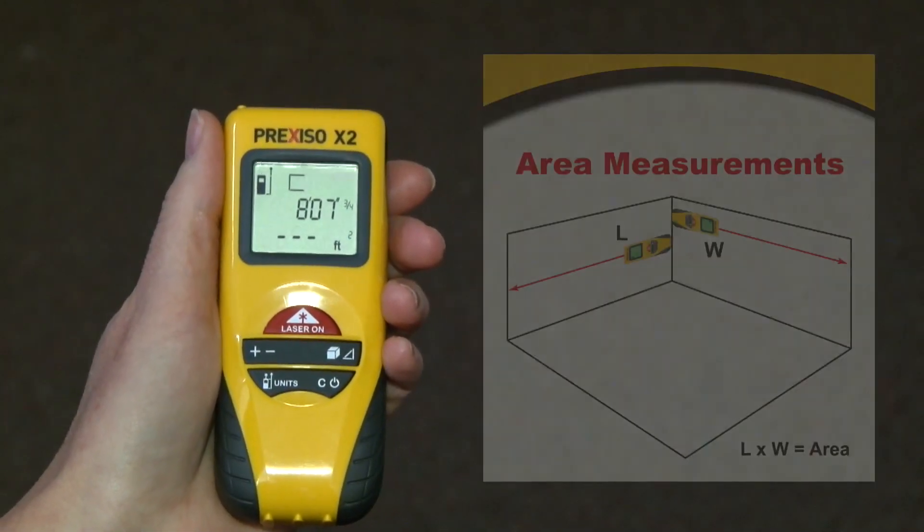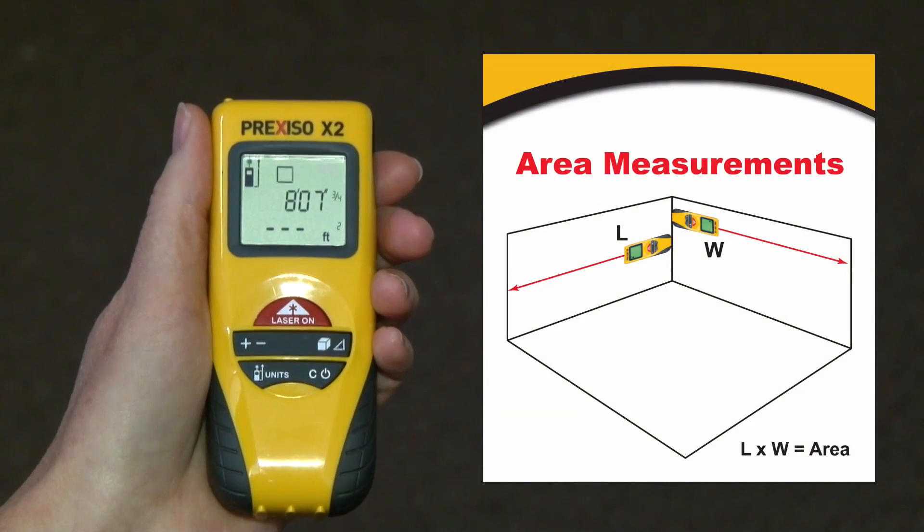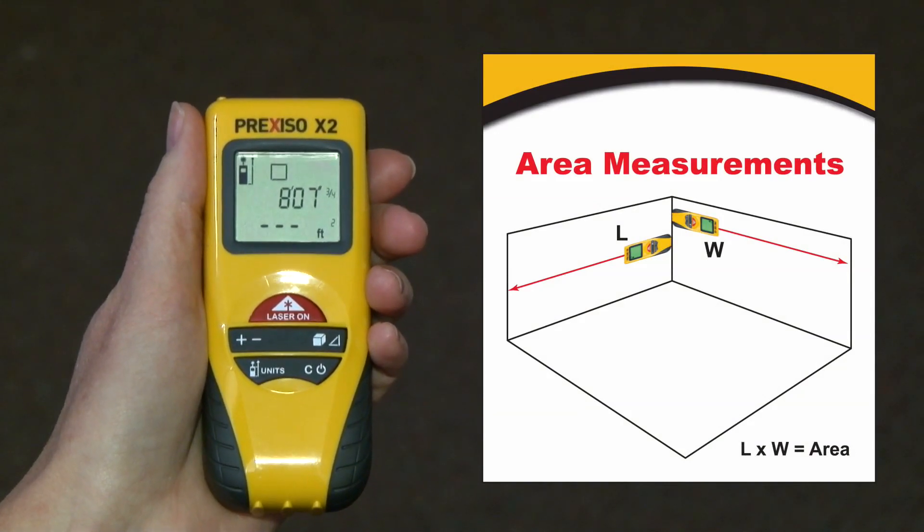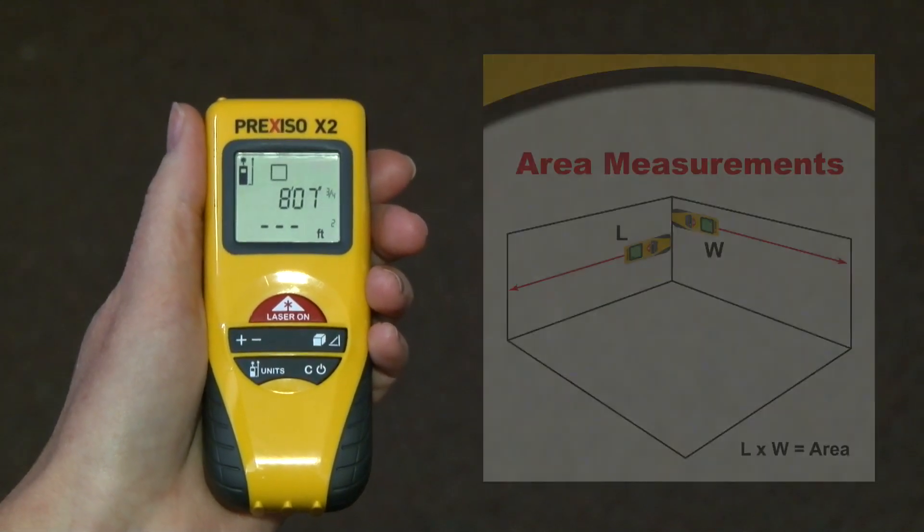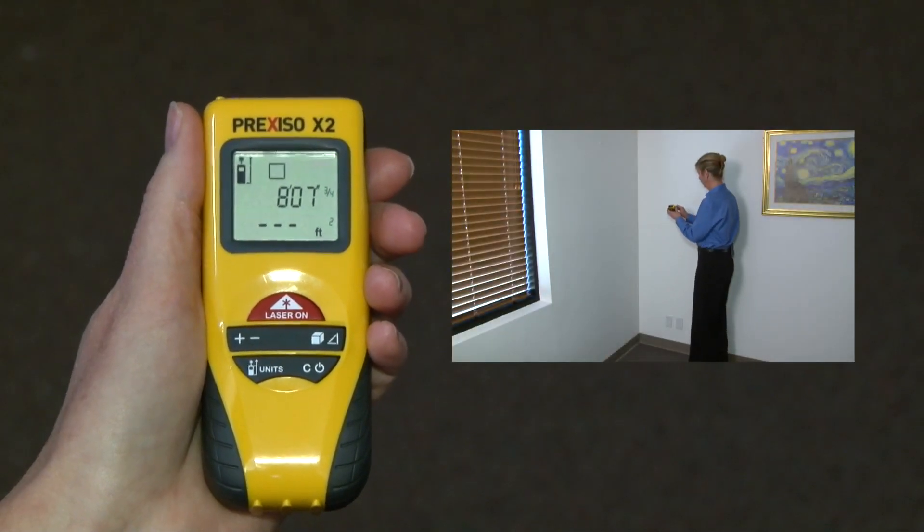Next, you'll see the unit prompting you to take the second measurement so it can calculate your area. Again, line up the device and the laser and press the red laser button and release.